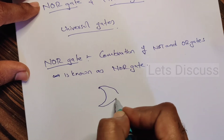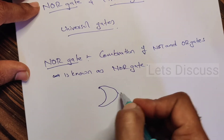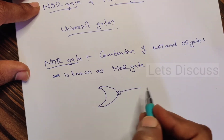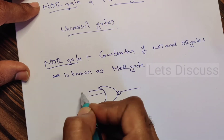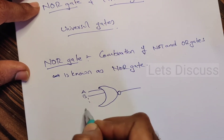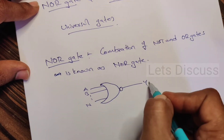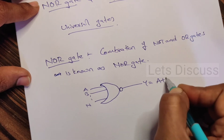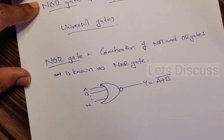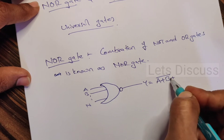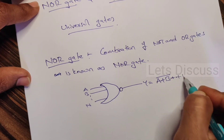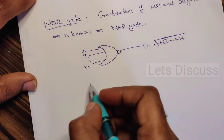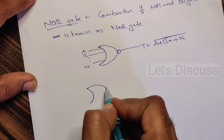This is the symbol of OR gate. If we add a bubble in front of this, this is NOR gate. It has only one output and it has multiple inputs — A, B, up to N inputs. The output of NOR gate is Y = (A + B + ... + N) bar, that is, the total OR of all inputs, complemented.